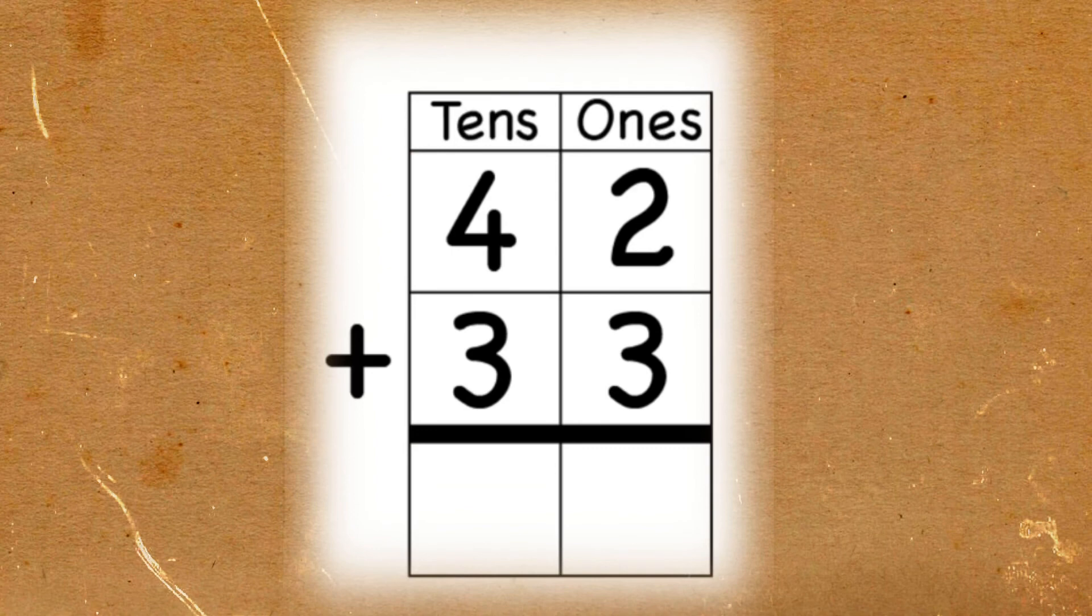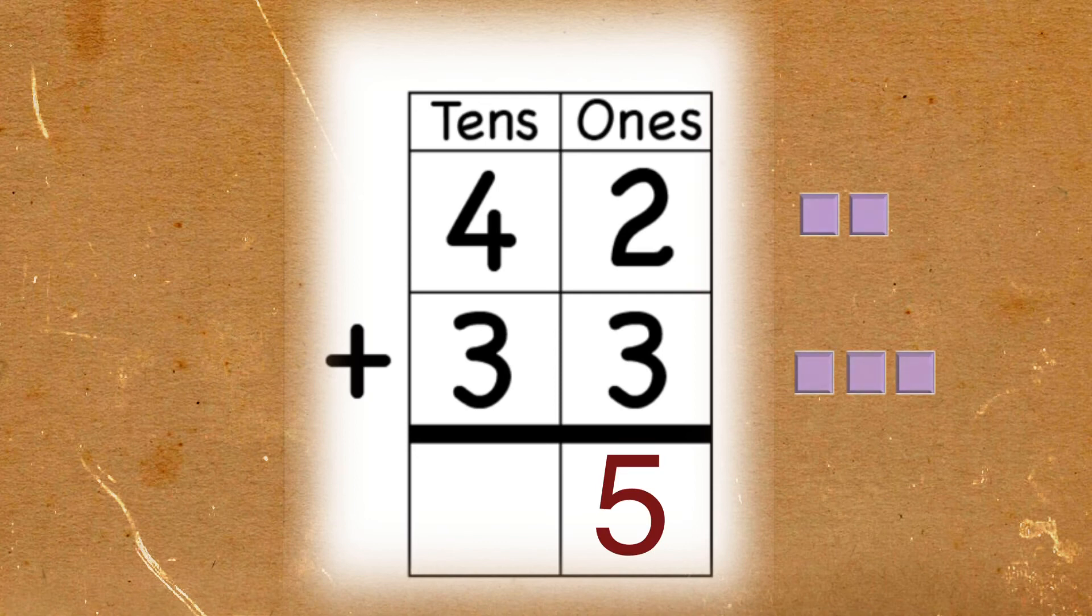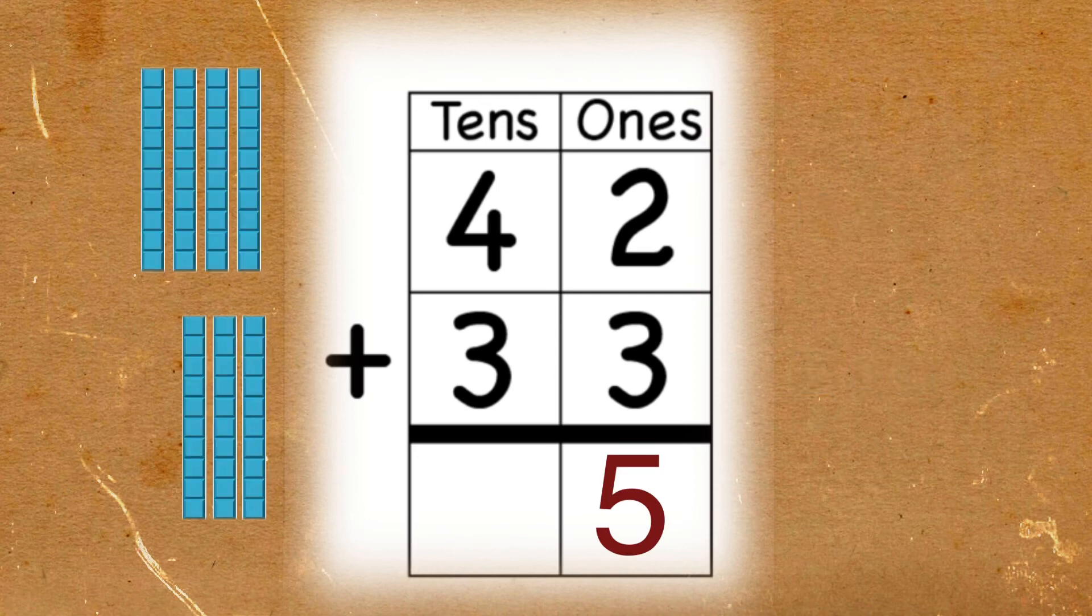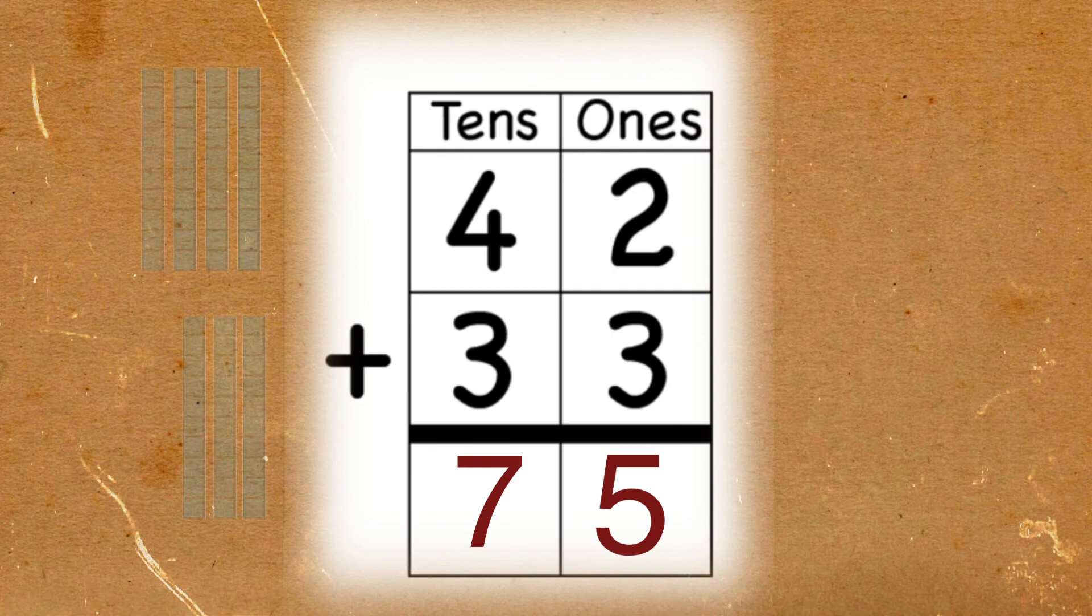Let's go to the last problem. Again, you have to focus on the ones place. 2 plus 3 is equal to 5. Let's proceed to the tens place. 4 plus 3 is equal to 7. The final answer is 75.